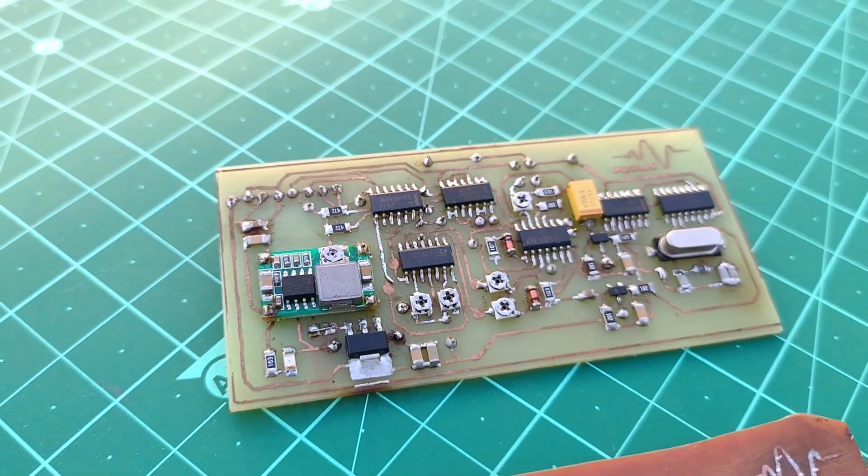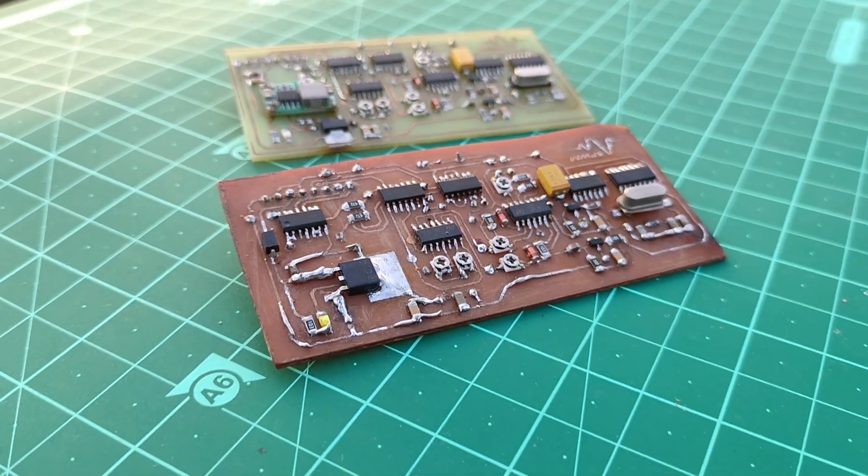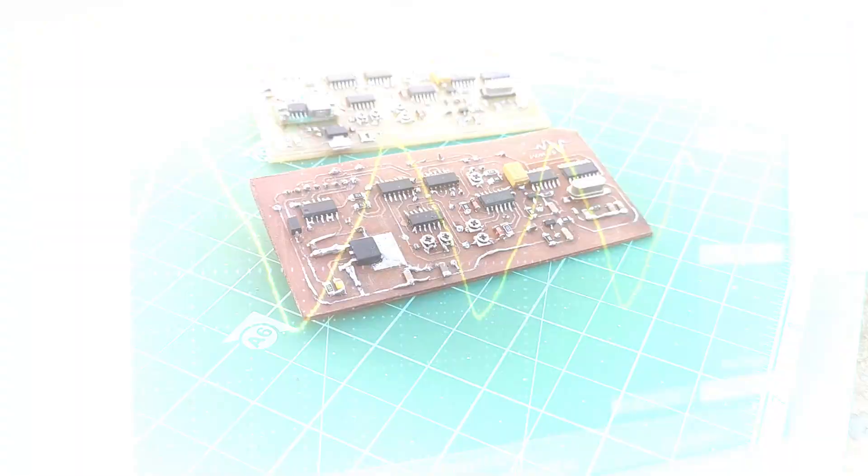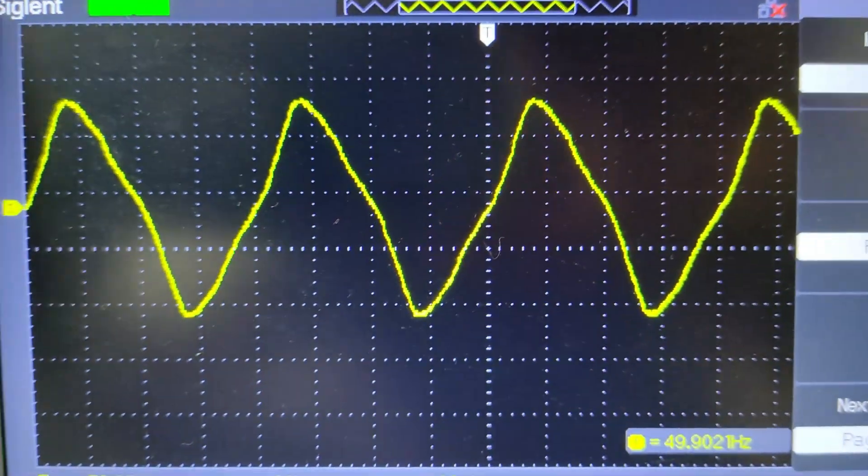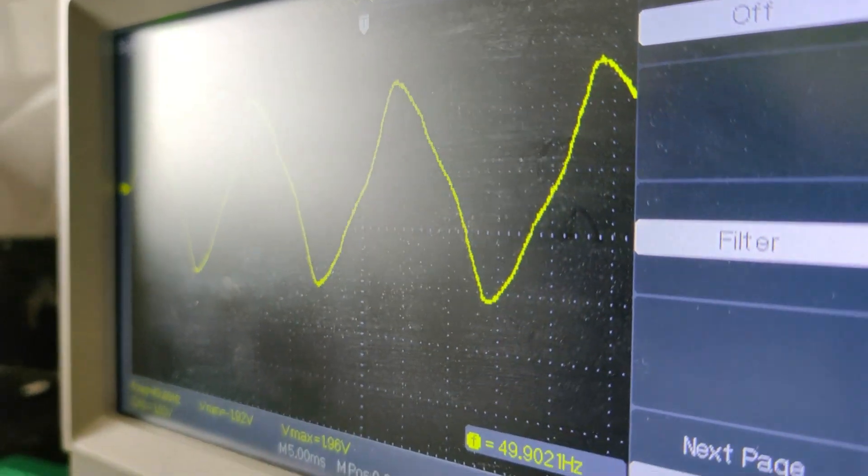Hi guys, welcome back to my channel and this is the analog SPWM card. This card is generating the required SPWM signals to produce a pure sine wave at the output of an inverter controlled by an H-bridge. So without any further ado let's get started in the building of this project.